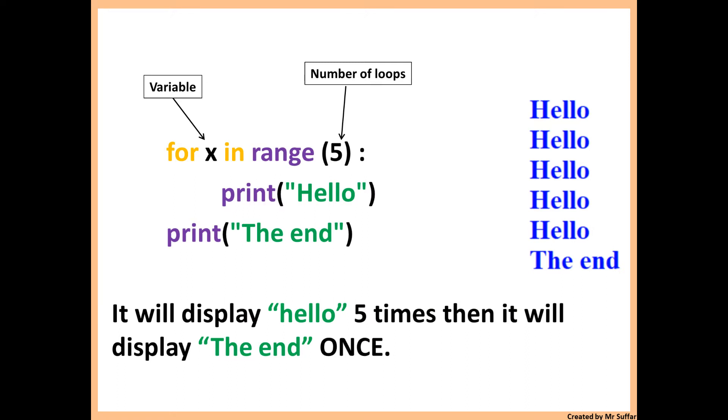Here's an example. For x in range 5, x is just a variable and it says 5. This will loop 5 times. Then we have print hello which is indented. Hello will be displayed 5 times as you can see on the right side. End will only be displayed once because it's not indented.